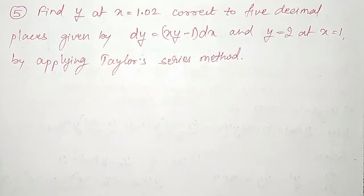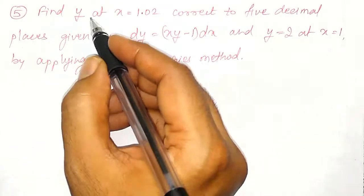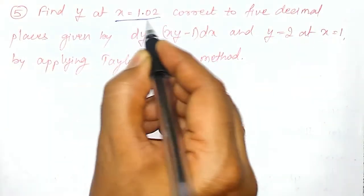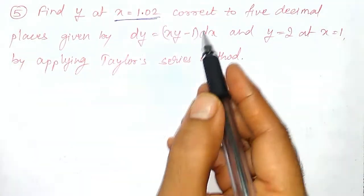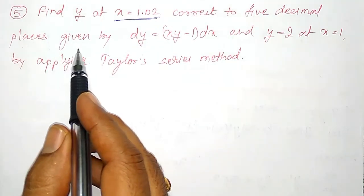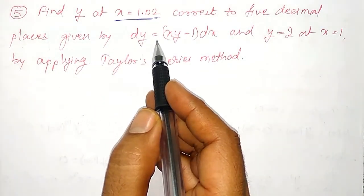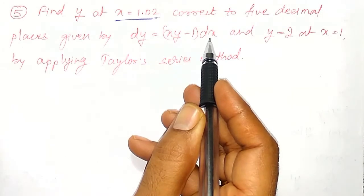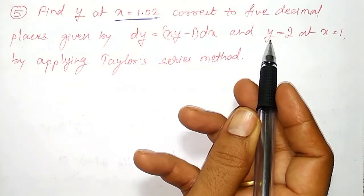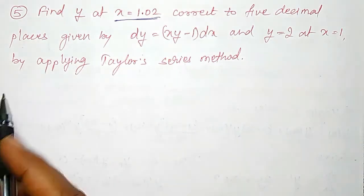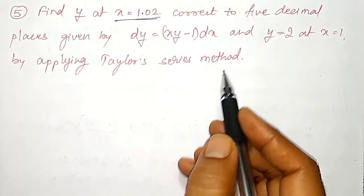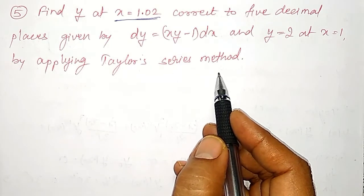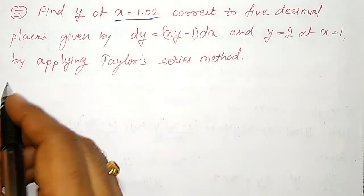Welcome friends, another simple example on Taylor series I am going to do here. That is, find y value at x equal to 1.02, correct to 5 decimal places, given dy is equal to (xy minus 1) dx, and y equal to 2 at x equal to 1, by applying the Taylor series method.